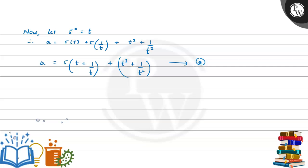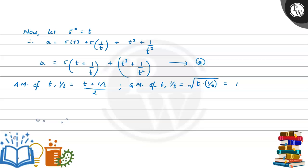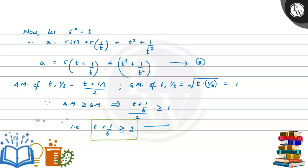Now let's find the minimum values for (t plus 1 divided by t) and (t squared plus 1 divided by t squared) using the AM-GM inequality. The arithmetic mean of t and 1 divided by t is (t plus 1 divided by t) divided by 2, and the geometric mean is square root of (t times 1 divided by t), which equals 1. Since AM is greater than or equal to GM, we get t plus 1 divided by t is greater than or equal to 2. Let's call this equation 1.